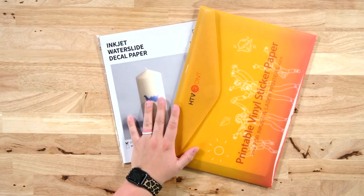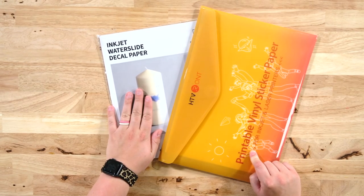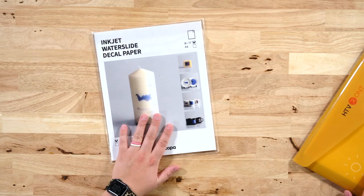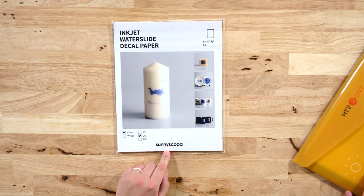But the two we're talking about today is printable vinyl and inkjet water slide paper. So this water slide decal paper is Sunny Scopa. I have tested, I would say six to 10 brands.